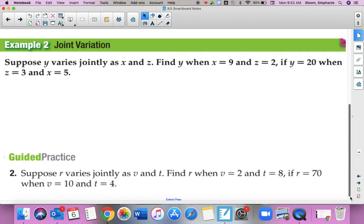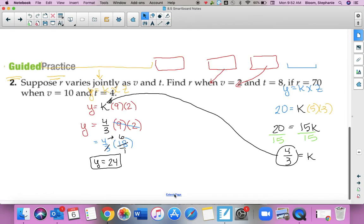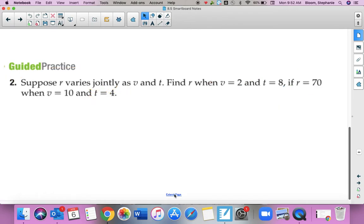Let's try one more like that. This time, suppose R varies jointly as V and T. So R varies jointly as V and T would look like that. We want to find R. So we want to know what R is when V is 2 and T is 8.